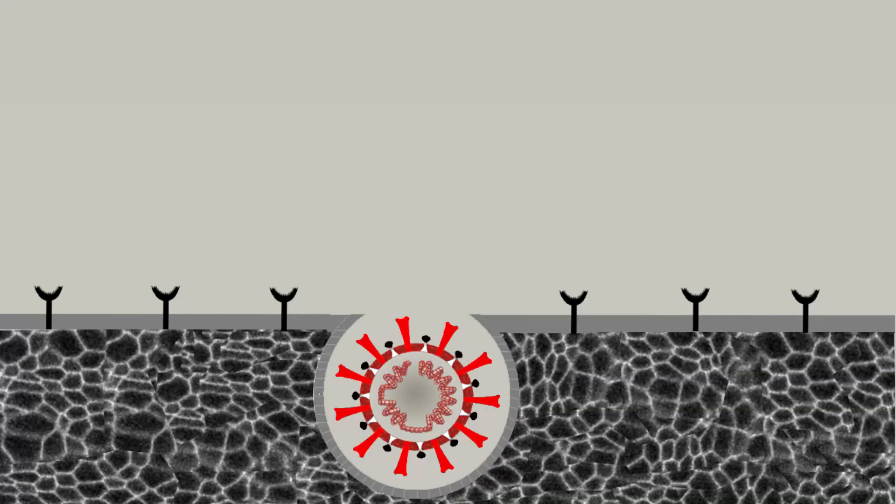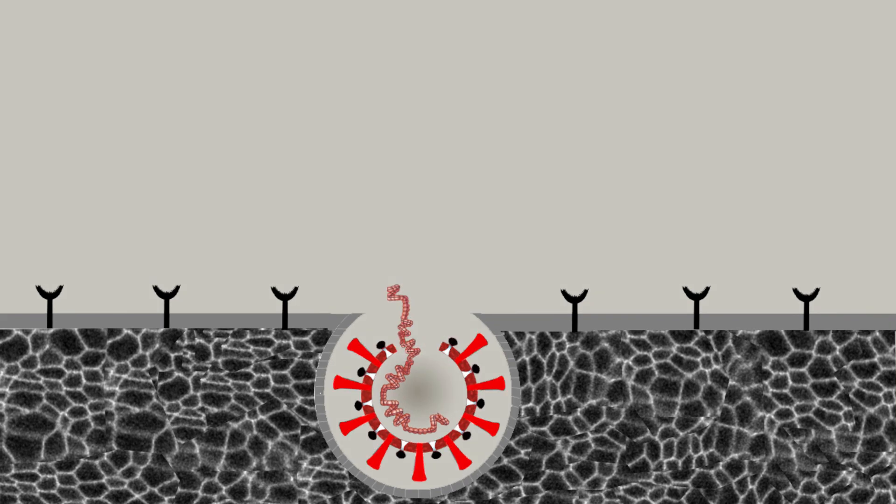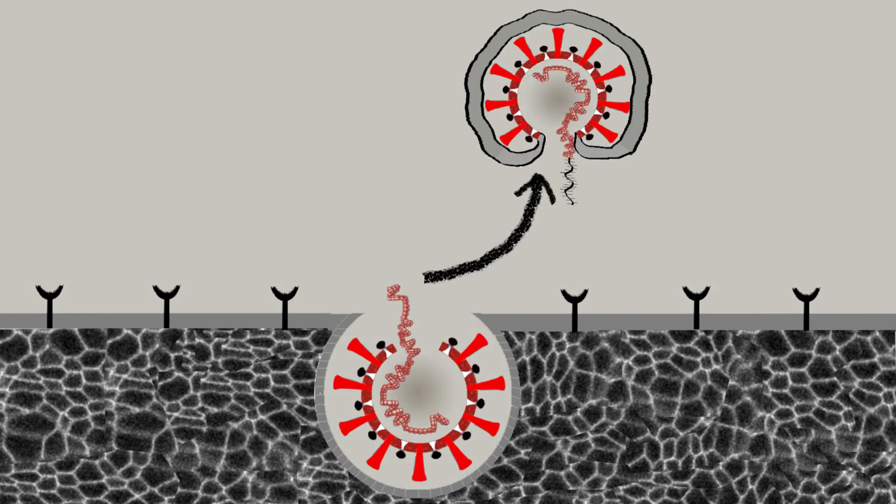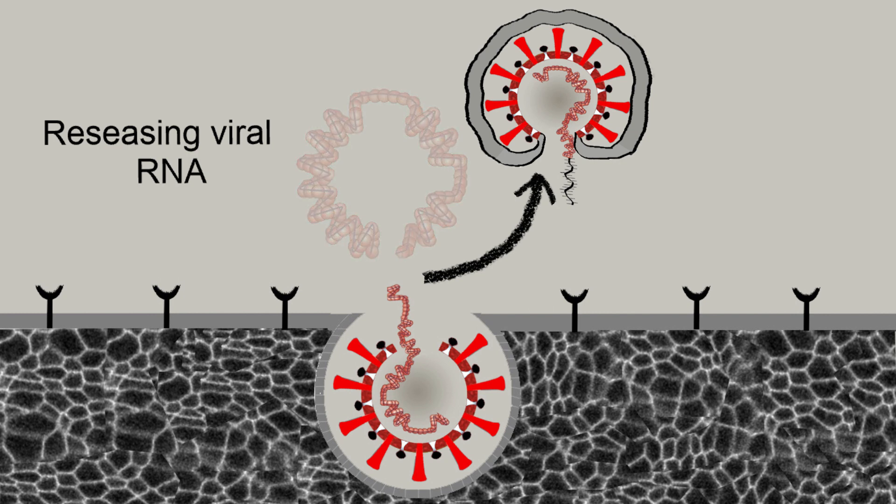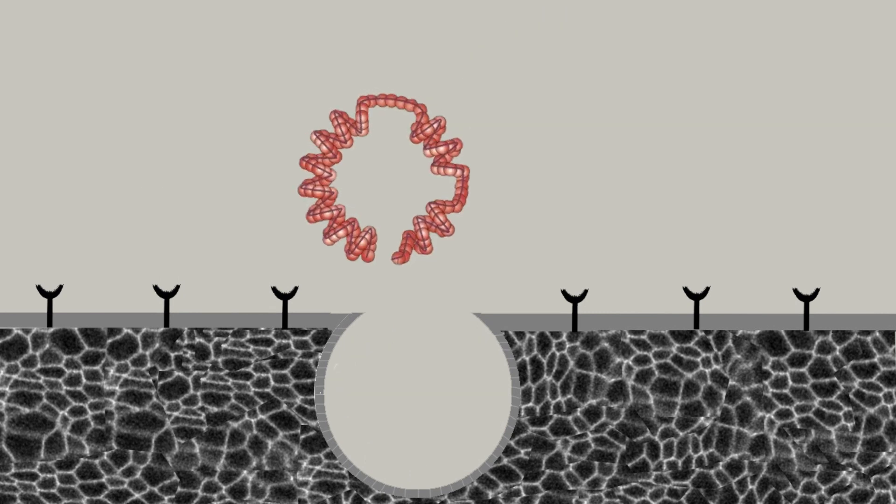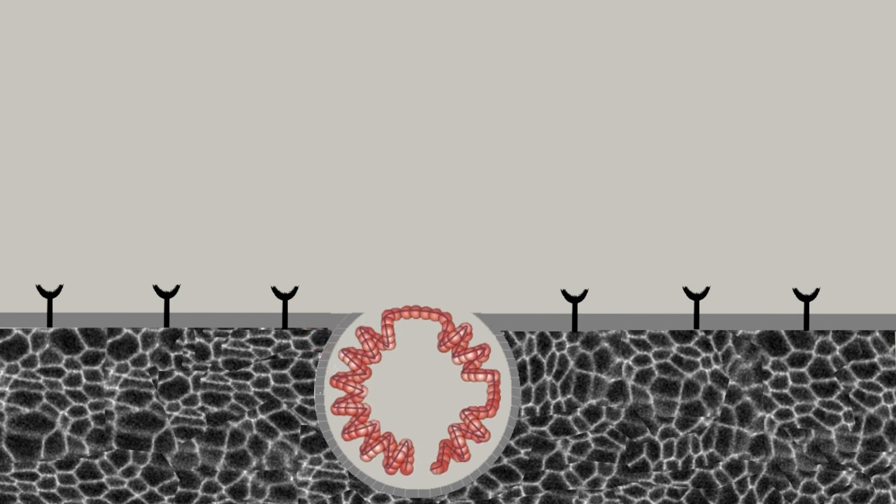Once inside, the virus fuses its protective oily membrane and releases its viral genetic materials called RNA or ribonucleic acid. This viral RNA uses the host cell mechanism to duplicate itself.